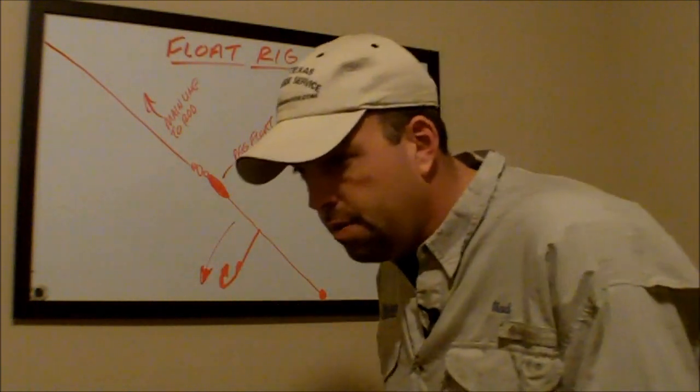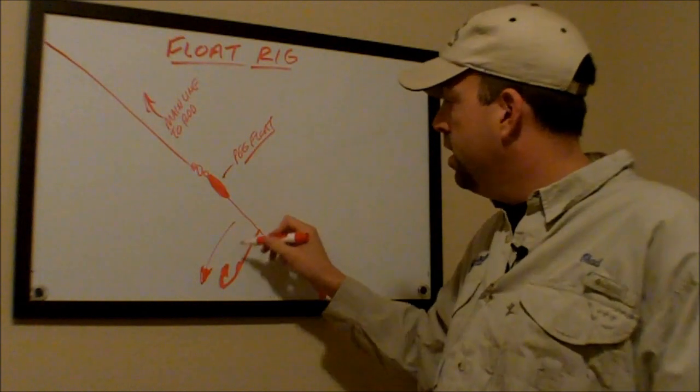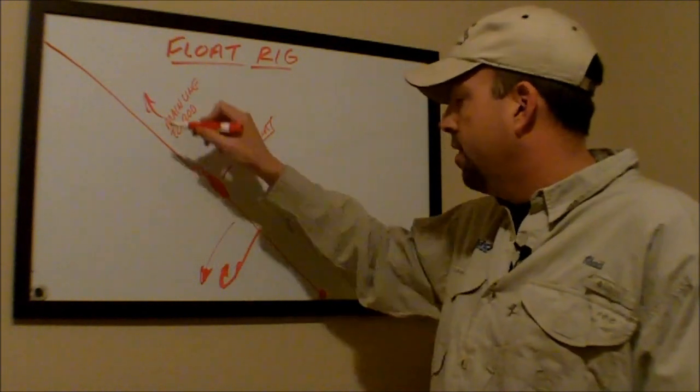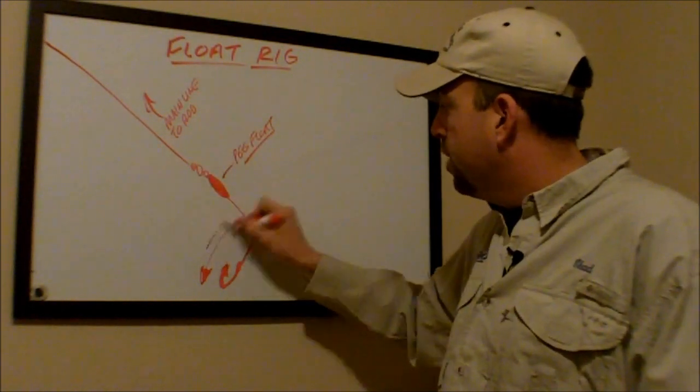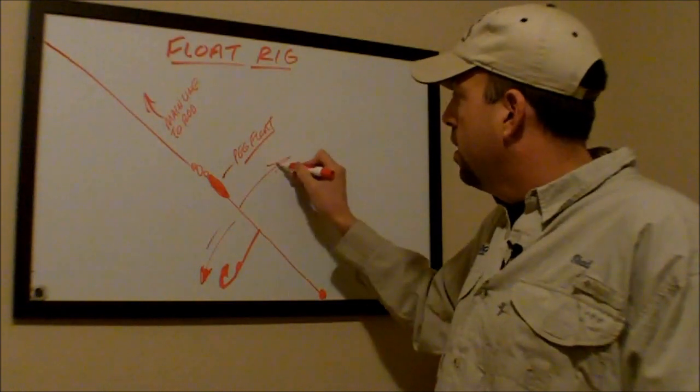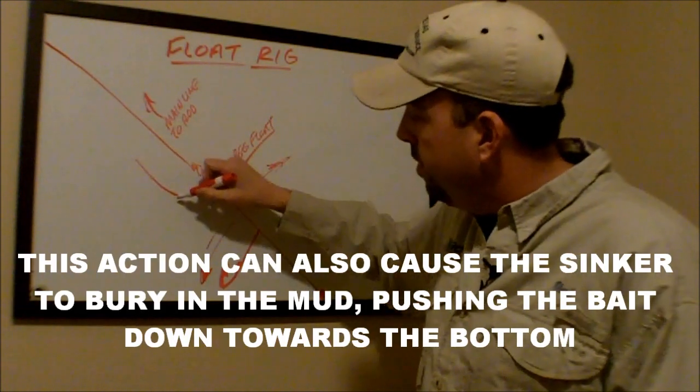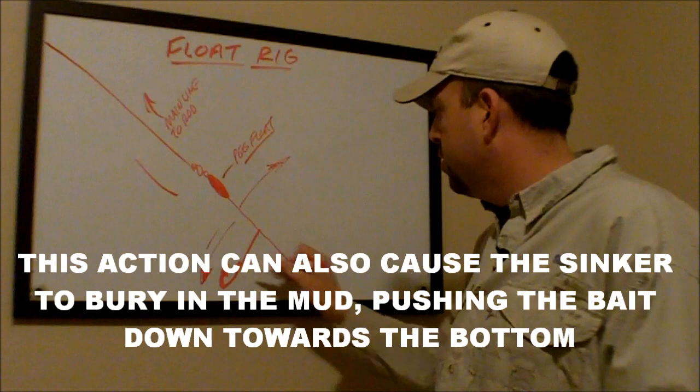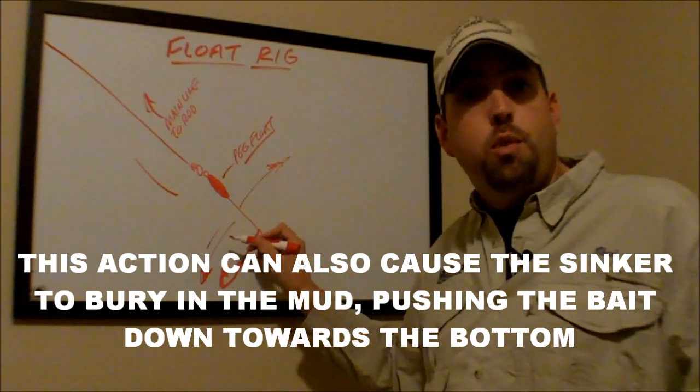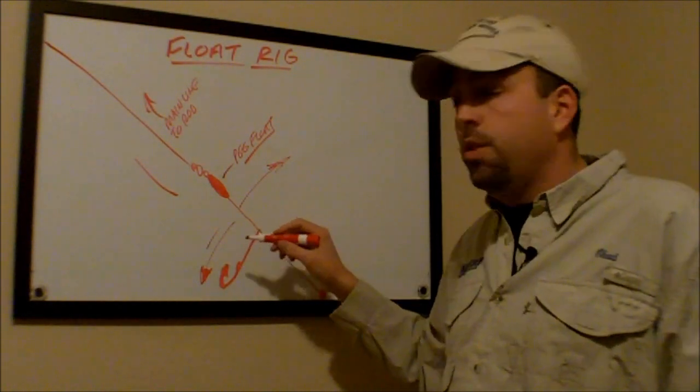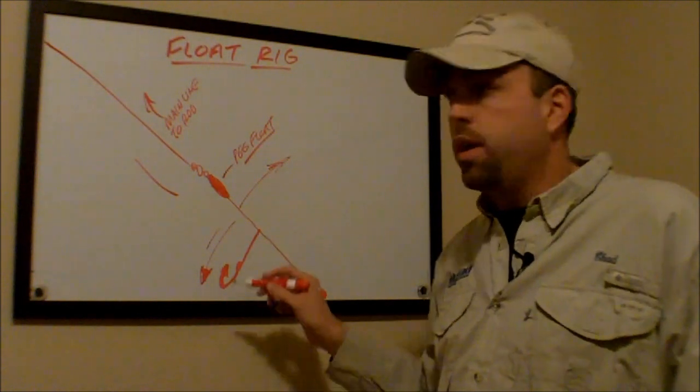And then the boat drifts and rocks back the other direction, and this line pulls tight, and this rig pops up, which pulls this line up this way a little bit and pulls your sinker back. It causes it to be very erratic with a three-way rig.